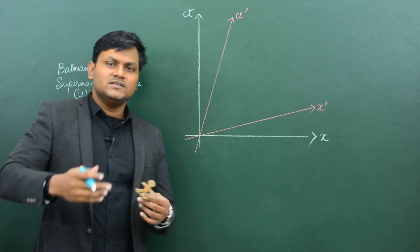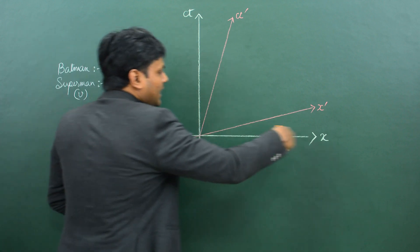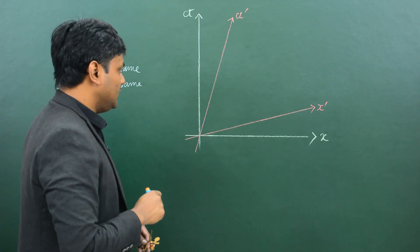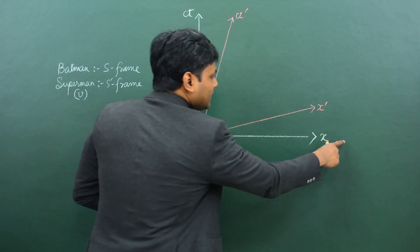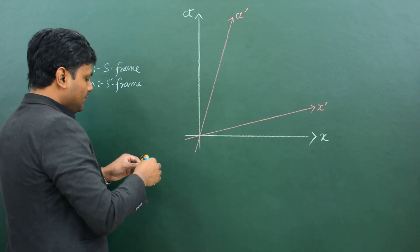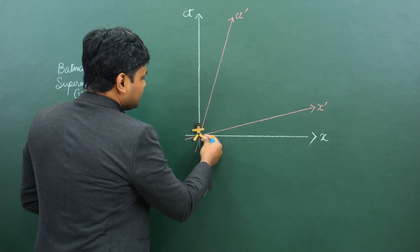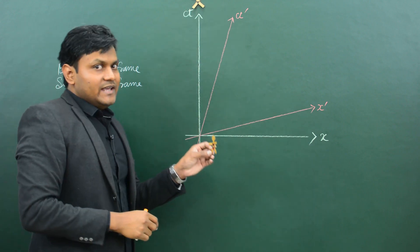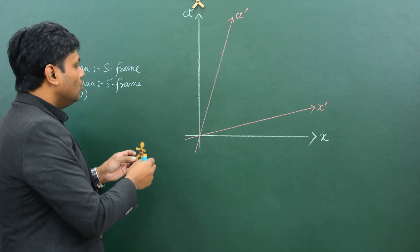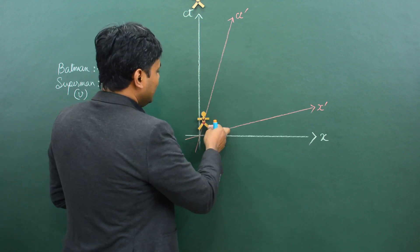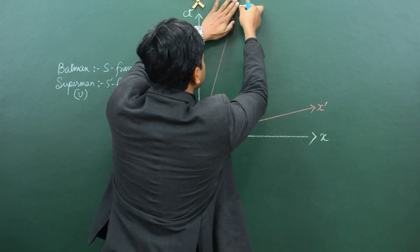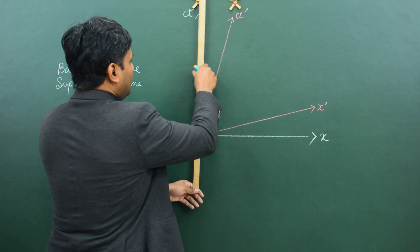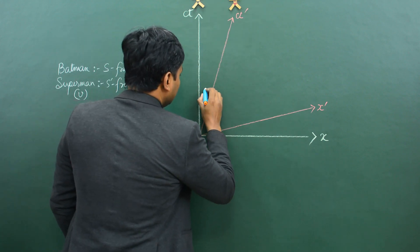To simplify our calculations, I am only considering one dimensional motion. Therefore the space-time diagram consists of just one space dimension, X, and the time dimension represented by CT. For Batman, the space axis and the time axis are perpendicular to one another, and Batman's world line — since he is at rest with respect to himself — is along the CT axis. Superman is traveling at very high speeds, so his world line with respect to Batman will be inclined at a particular angle phi, where tanh(phi) equals V upon C.